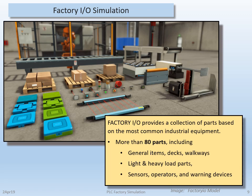This particular package has a wide variety of parts — more than 80 parts, including machine material handling conveyors, manipulators, various sized boxes and pallets, as well as machinable material. There are general build items such as walkways and decks, and of course there's also a good selection of sensors, indicators, operators, and warning devices, which I will show you over the next few slides.